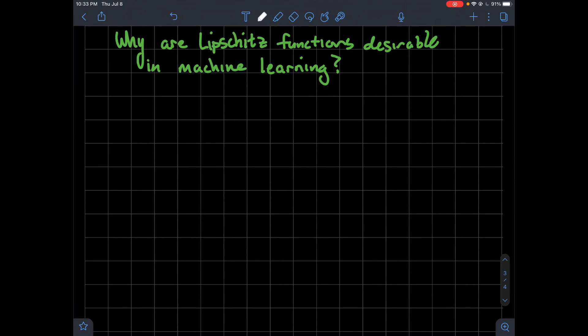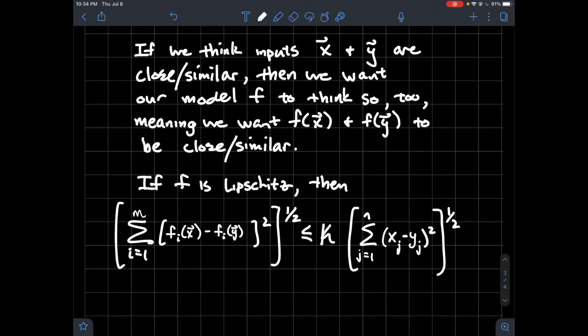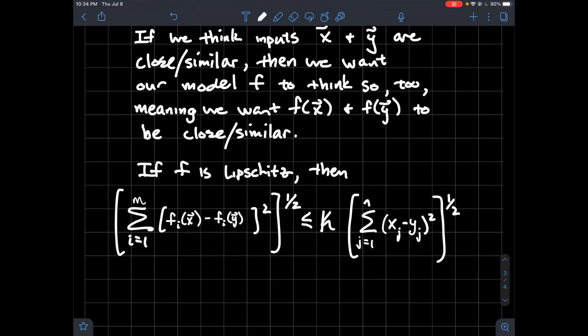Why are Lipschitz functions desirable in machine learning? This goes back to the relationship between inputs and outputs. If you think of the inputs as the vectors x and y, and those are close or similar, you're doing machine learning because you want the computer to also think that, so it can make good guesses on things that are obviously related to each other. If x and y are inputs that are similar, you want to make sure your model f also thinks so. You want f of x and f of y to be close or similar. Similar is intuitive - these two pictures are both apples, right? We need to translate that in the math: if the distance between the inputs is small, like two apples, there should be a pretty small number. I want the computer to think that as well and predict that.